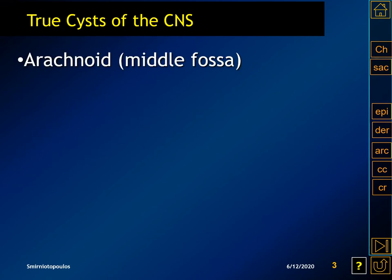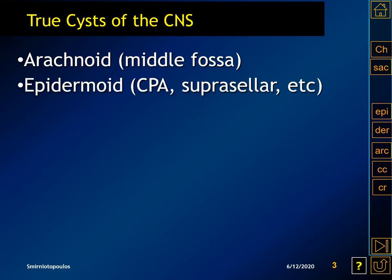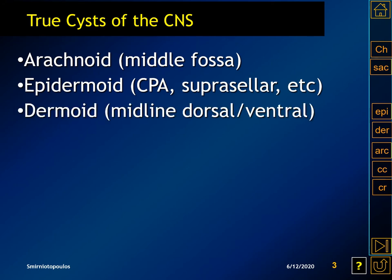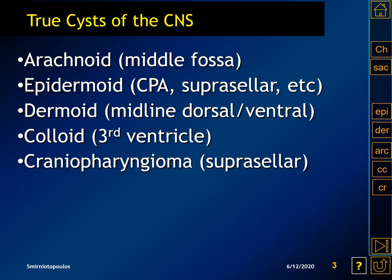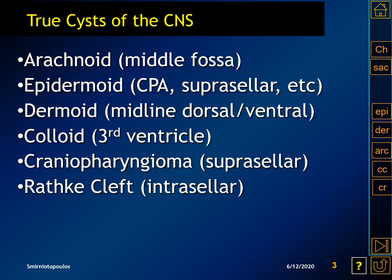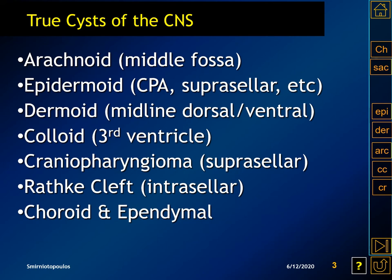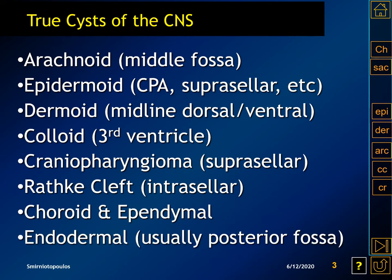There are many different cysts of the central nervous system. Arachnoid cysts occur in the middle fossa. Epidermoid cysts occur in the cerebellopontine angle cistern and suprasellar cistern. Dermoid cysts are usually midline and may be dorsal or ventral to the brain. Colloid cysts are almost always in the anterior third ventricle. Craniopharyngiomas begin in the suprasellar cistern. Rathke's cleft cysts are intrasellar, and there are also choroid and ependymal cysts. Endodermal cysts are rarely seen in the posterior fossa.